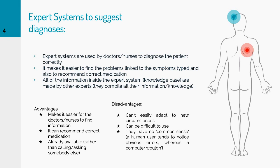So how does an expert system suggest diagnosis? They are used by doctors and nurses so they can diagnose the patient correctly. It makes it easier to find problems linked to the symptoms typed and also to recommend correct medication. All of the information inside the expert system is made by other experts who compile all their information and knowledge.